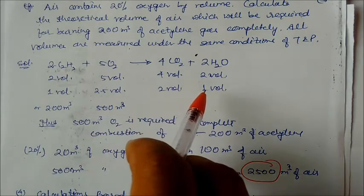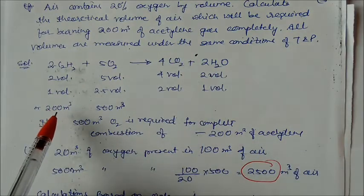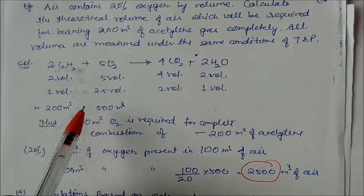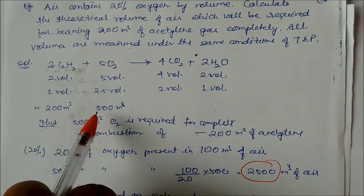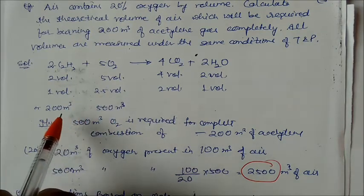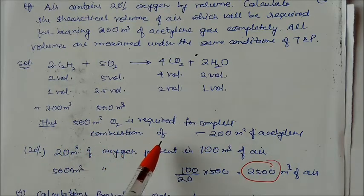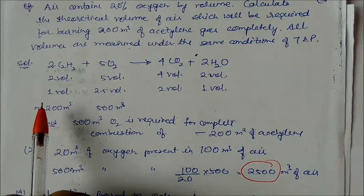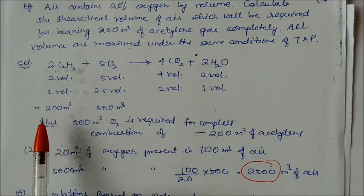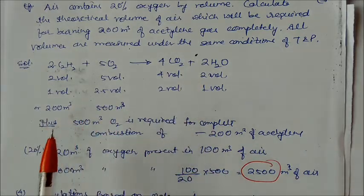Dividing by 2: 1 volume acetylene requires 2.5 volumes of oxygen. Given 200 m³ of acetylene, oxygen required = 2.5 × 200 = 500 m³. So 500 m³ of oxygen is required for complete combustion of 200 m³ of acetylene.